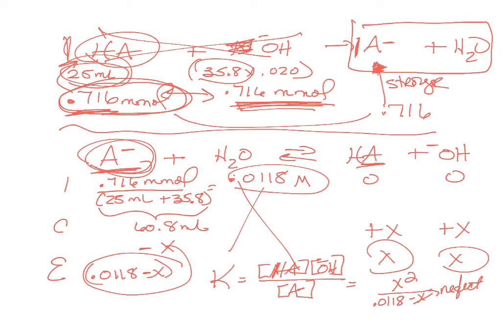A minus is a base, so we need Kb, but the problem gave us Ka from pKa. The given pKa is 3.9, so Ka is 1.26 times 10 to the minus 4.